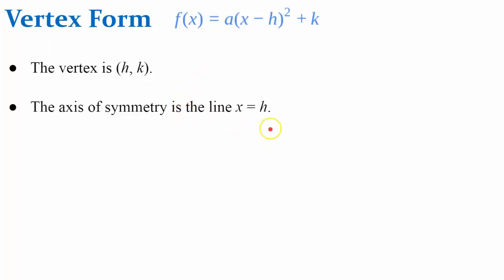The axis of symmetry is the line x equals h. The axis of symmetry passes through the vertex. The value of a cannot be 0. This would no longer be a quadratic function if this was equal to 0. It would eliminate the x squared term.